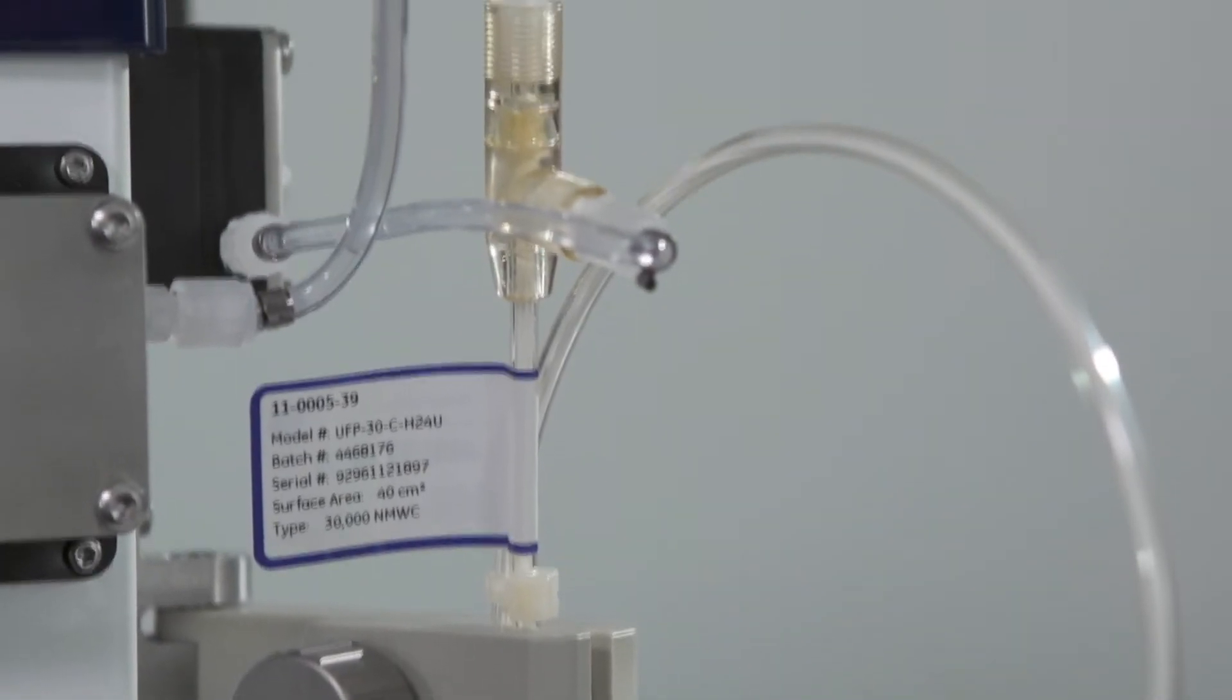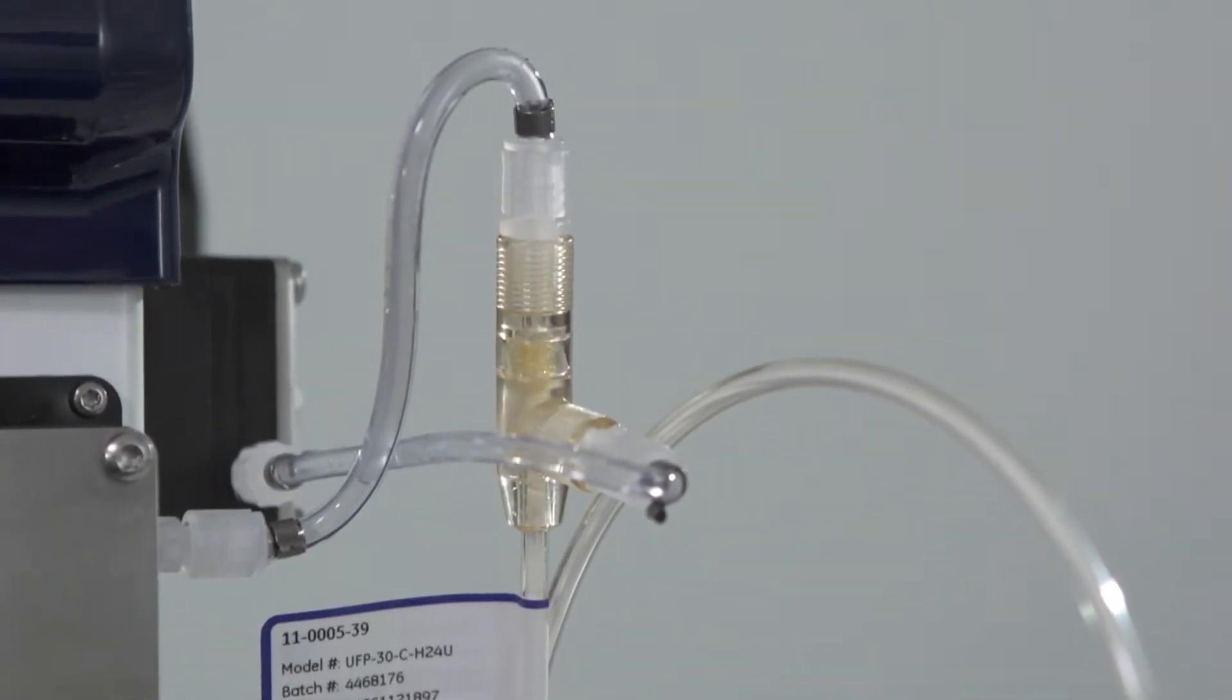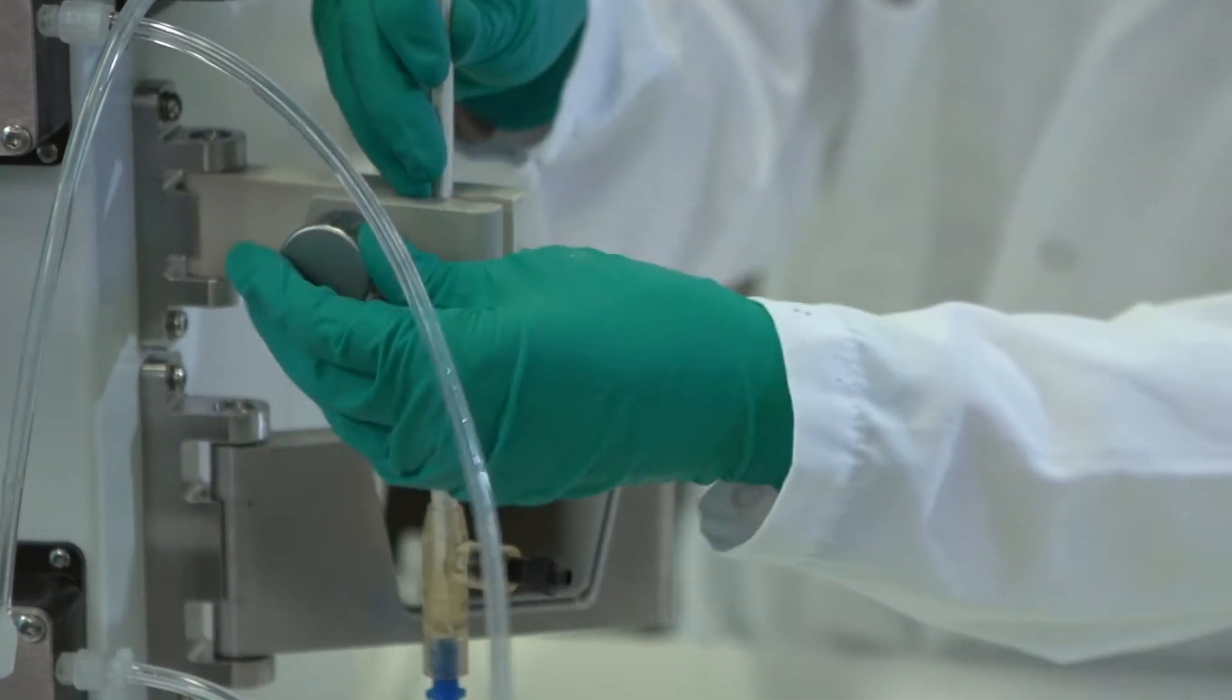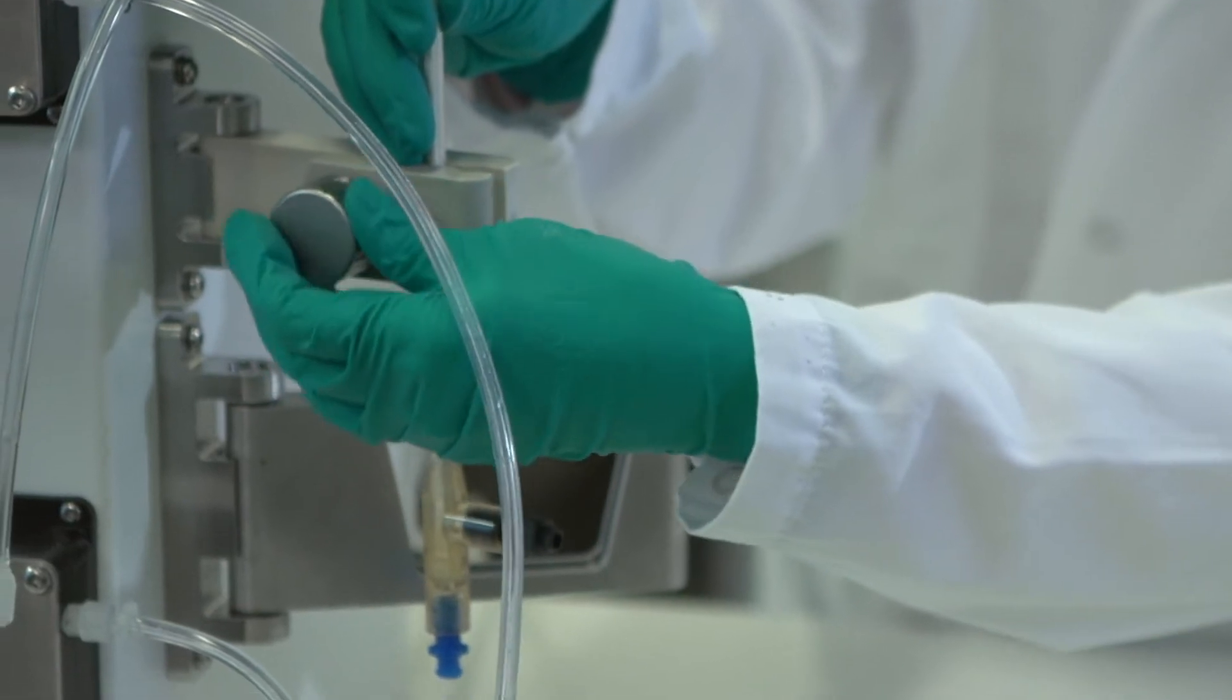To achieve a stable flow and to avoid premature fouling of the filter when working with microfiltration, the permeate control pump regulates the flow against set parameters.